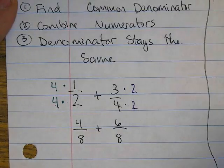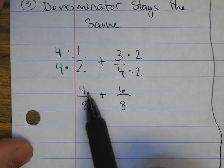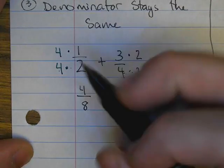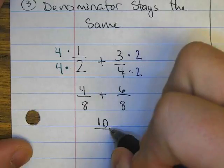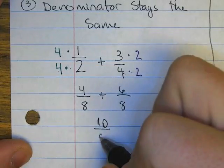Next, combine the numerators: four plus six equals ten. The denominator stays the same, which is eight.